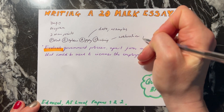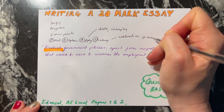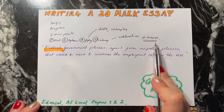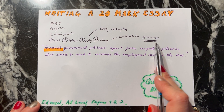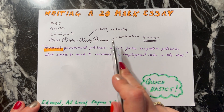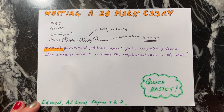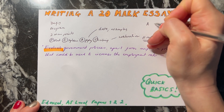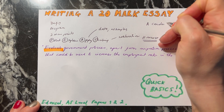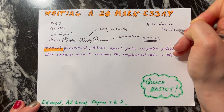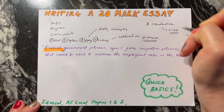I suggest that you start these evaluation paragraphs with the word 'however,' so that the marker knows that you're about to evaluate. This is where you look at the bigger picture when you're evaluating. The final thing is that you must have a conclusion at the end of your essay, and your conclusion is essentially your view on the question.